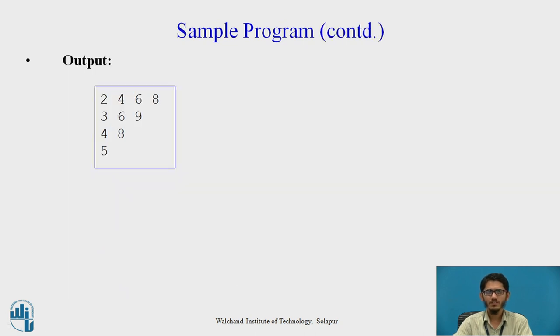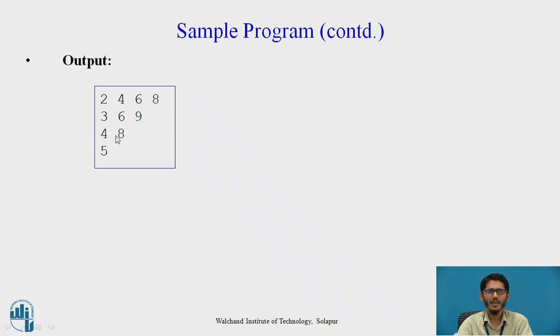This is the output. The first line shows the multiples of 2: 2, 4, 6, 8 — 10 is not included. Then the multiples of 3 on the next line: 3, 6, 9. Then the multiples of 4: 4 and 8. And then the multiples of 5: just 5.